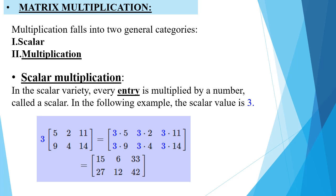3 multiply 5, 3 multiply 2, 3 multiply 11, 3 multiply 9, 3 multiply 4, 3 multiply 14. Now you can see the multiplication: 3 fives are 15, 3 twos are 6, 3 elevens are 33, 3 nines are 27, 3 fours are 12, 3 fourteens are 42.